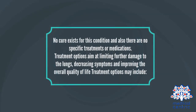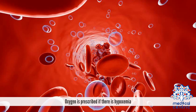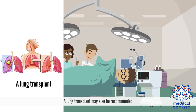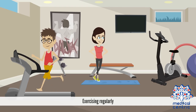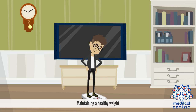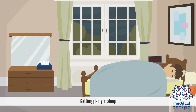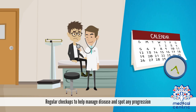No cure exists for this condition, and there are no specific treatments or medications. Treatment options aim at limiting further damage to the lungs, decreasing symptoms, and improving the overall quality of life. Treatment options may include: oxygen prescribed if there is hypoxemia, a lung transplant may also be recommended, smoking cessation for heavy smokers, counseling, exercising regularly, maintaining a healthy weight, getting plenty of sleep, using an inhaler, and regular checkups to help manage the disease and spot any progression.